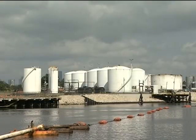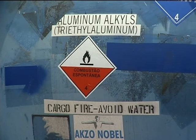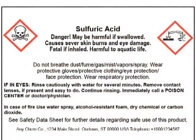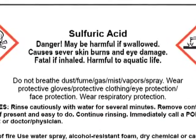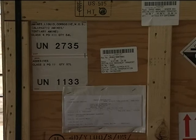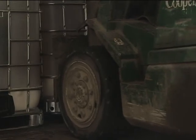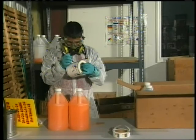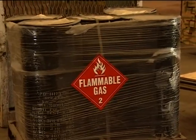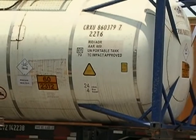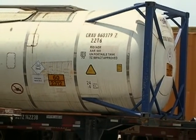Chemical manufacturers, importers, and distributors are responsible for labeling, tagging, or marking each container — commonly known as the primary container — of classified hazardous chemicals they ship. OSHA requires the information be prominently displayed in English on each container. OSHA also requires the name, address, and telephone number of the manufacturer, importer, or other responsible party be displayed on the shipped container. If the hazardous chemical is subsequently transferred by the employer from the primary container to a secondary container, the employer must label the secondary container. Employers are responsible for ensuring each container of hazardous chemicals in the workplace is labeled, tagged, or marked with the appropriate information. Workplace labels must be legible, in English, and prominently displayed on the container.